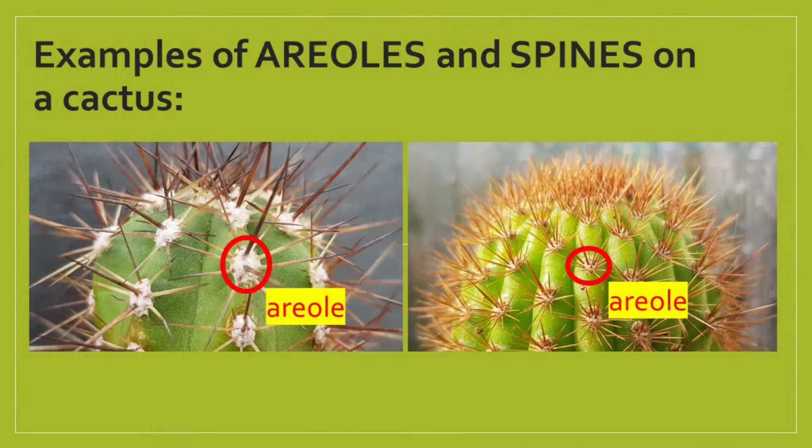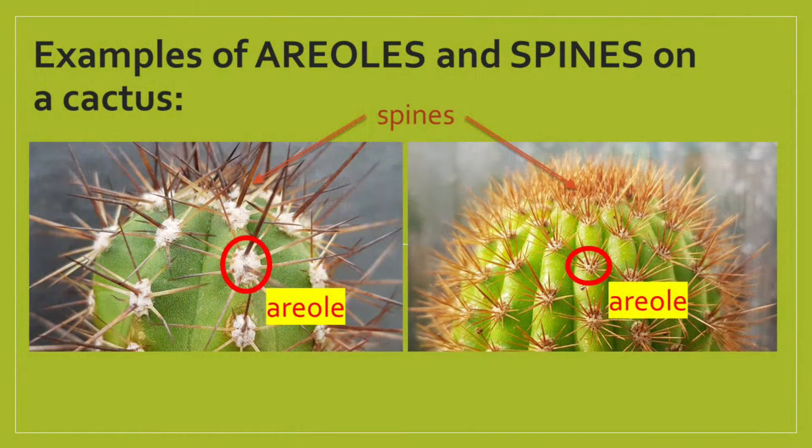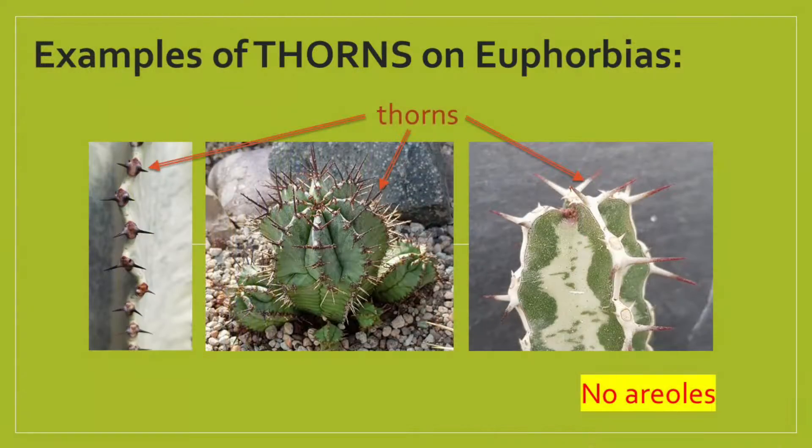The feature to look out for — unique to cacti only — are so-called areoles. Areoles are small, roundish, cushiony bumps, usually grayish, whitish, or yellowish in color. These areoles are the features from which the spines grow — often a longer central spine surrounded by smaller radial spines. These areoles are unique to cacti. Euphorbias, on the other hand, do not have areoles. Euphorbias have thorns that occur usually in pairs, with no radial display on areoles.